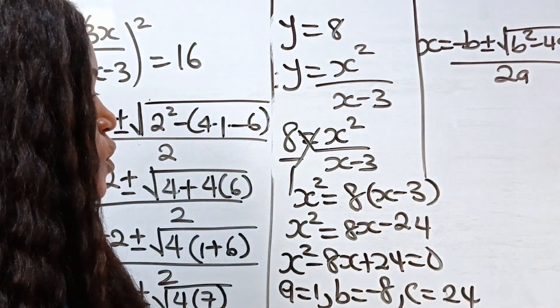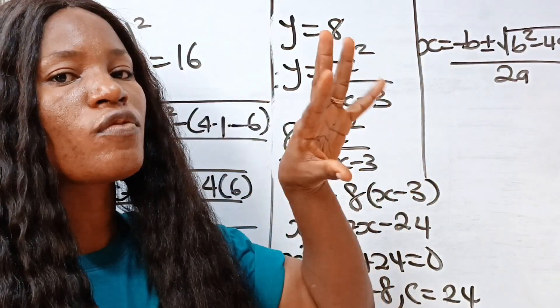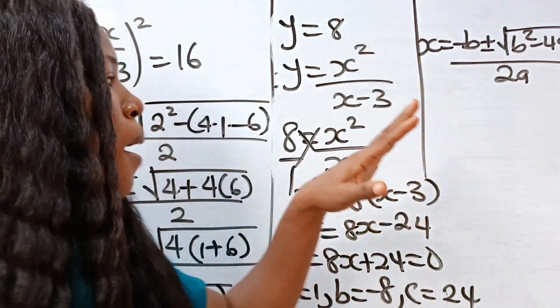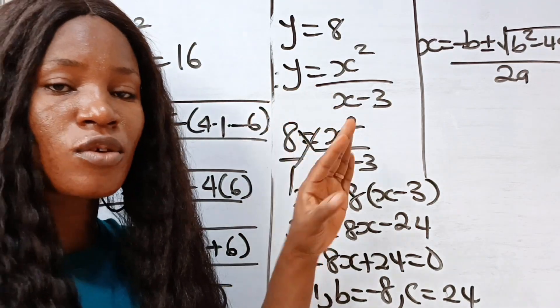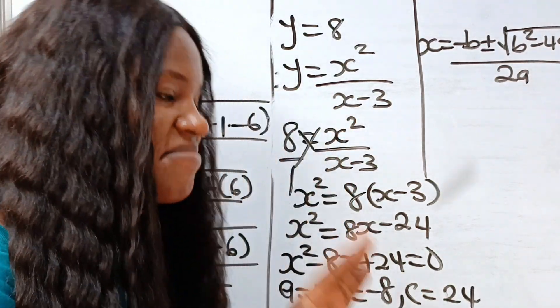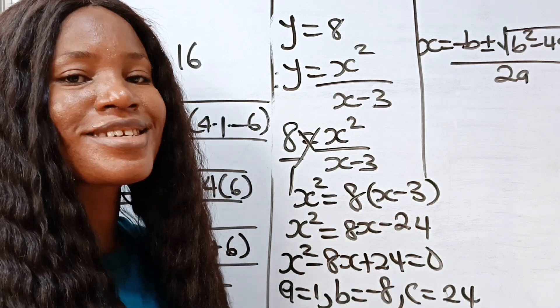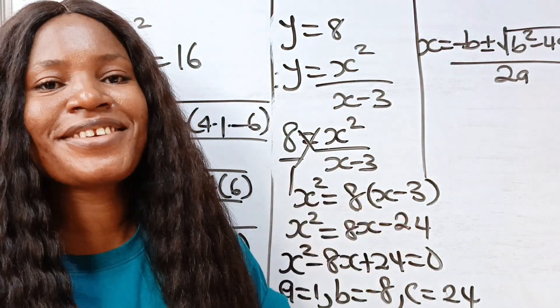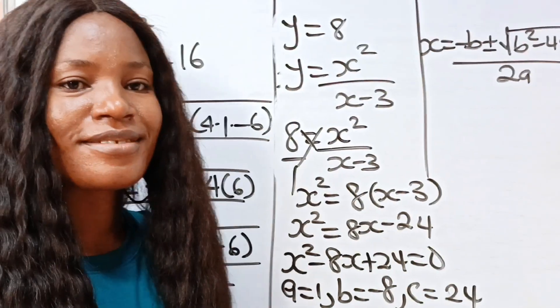Just substitute those values into the quadratic formula and get the remaining two values of x, making the total values of x four. Thanks so much for watching — I hope to see you next time. Bye.